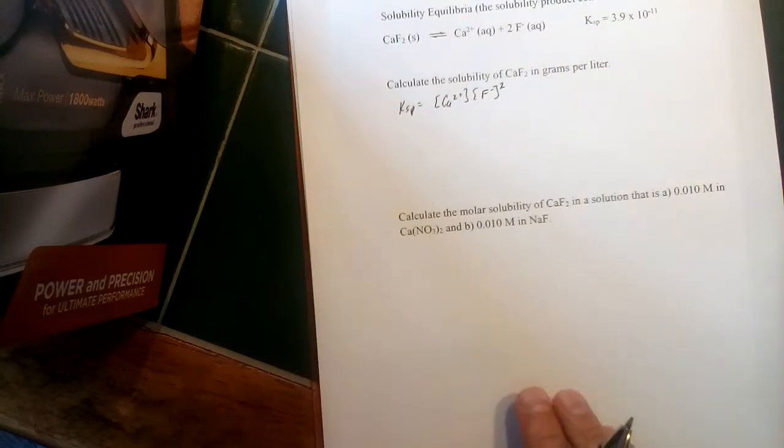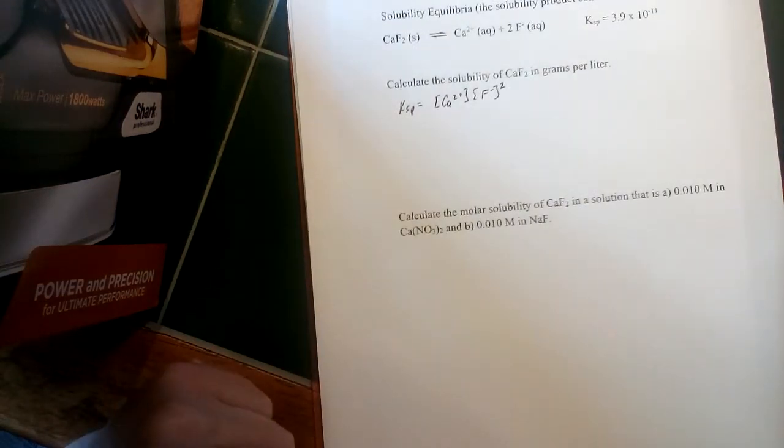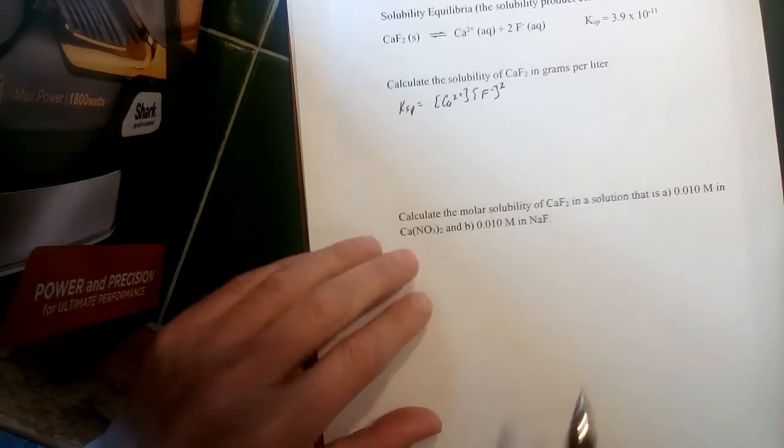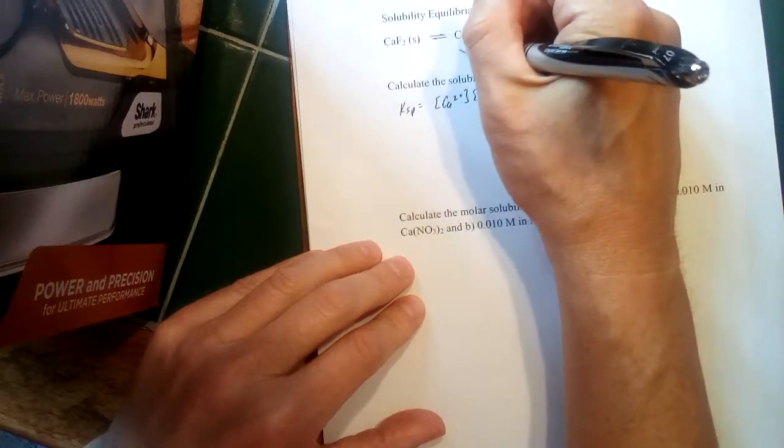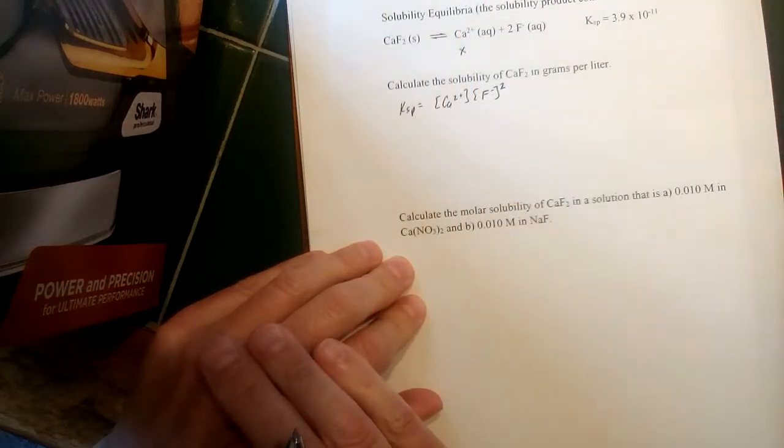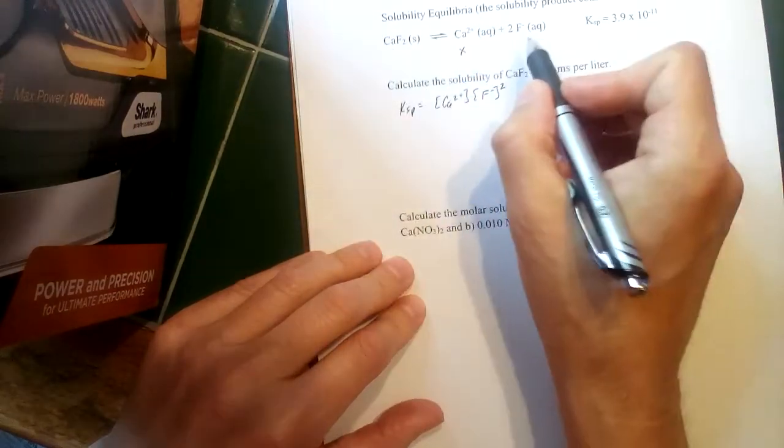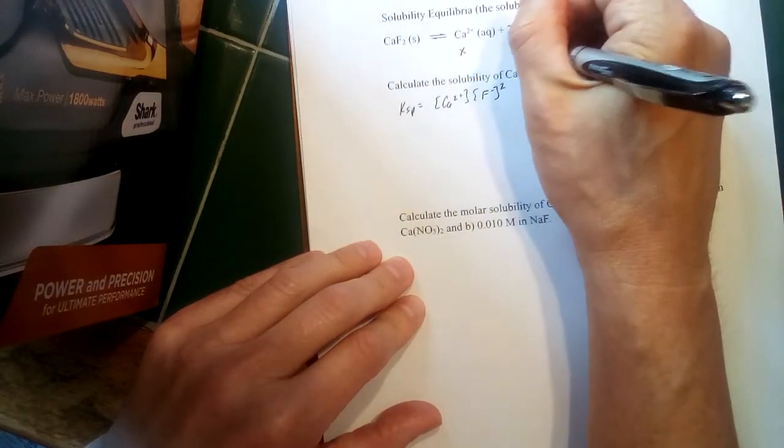So in this case, looking back at the reaction, we don't really need an ICE chart here. Initially there are no products, so the change is going to be what the concentration is at equilibrium. For every calcium fluoride that dissolves I'll get one calcium, so I'll call calcium x. Now for every calcium fluoride that dissolves I would get two fluoride ions, so I'll call that one 2x.